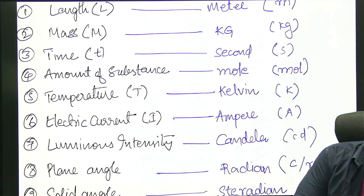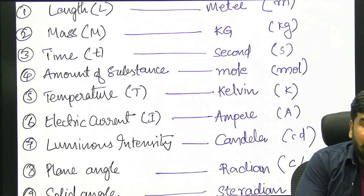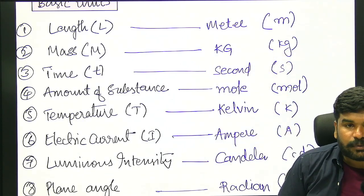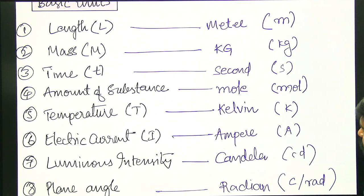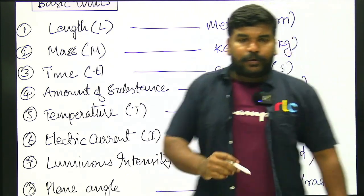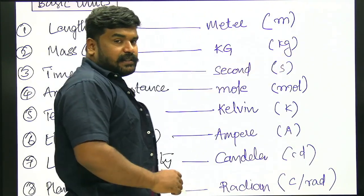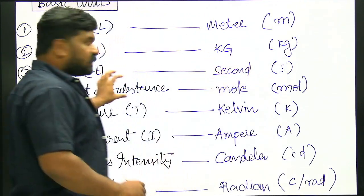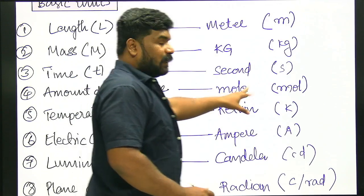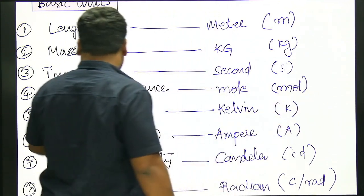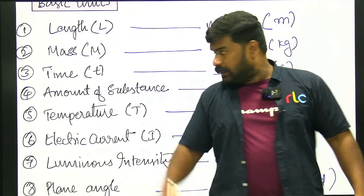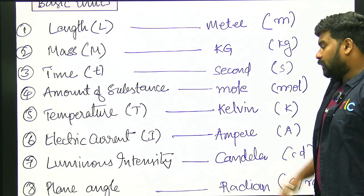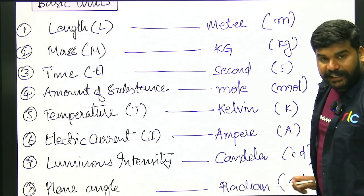We will discuss basic units. Length — we represent it as small 'm' (meters). Then mass — kilograms, the international unit, denoted by kg. Then time — second, denoted by 's'. Amount of substance — mole. Temperature — T, in Kelvin, K. Electric current — I, in Ampere. Luminous intensity — Candela, C.